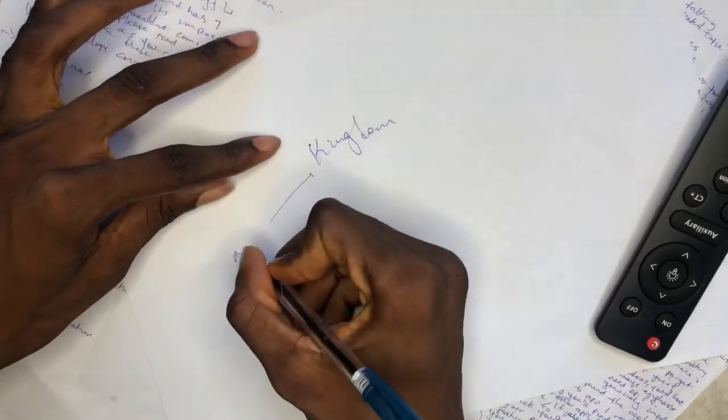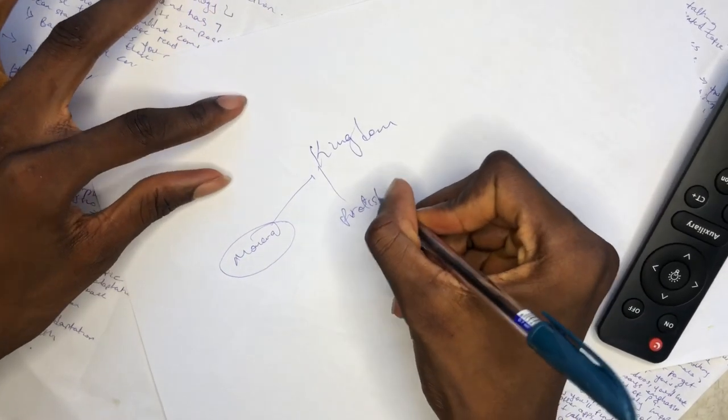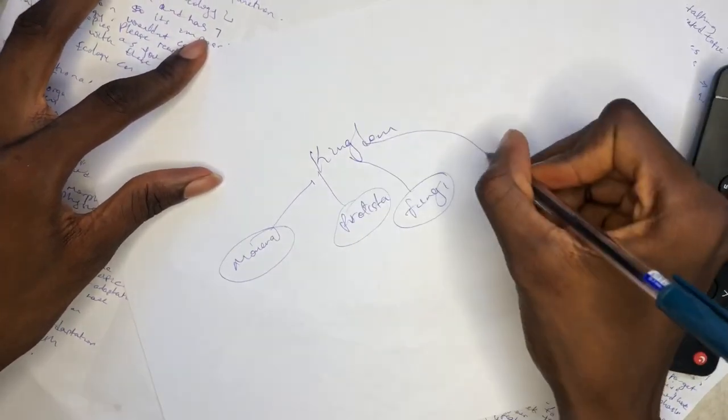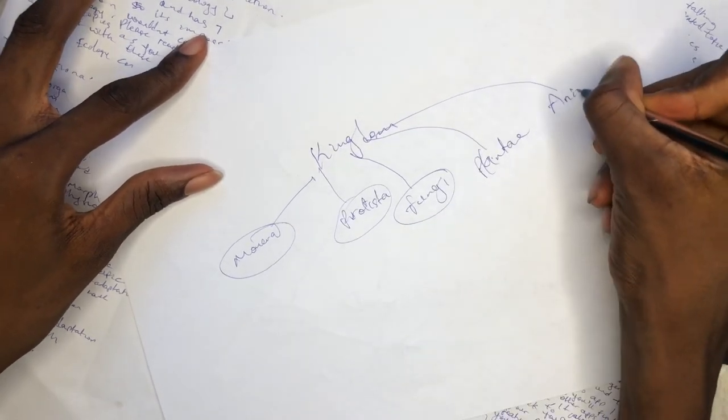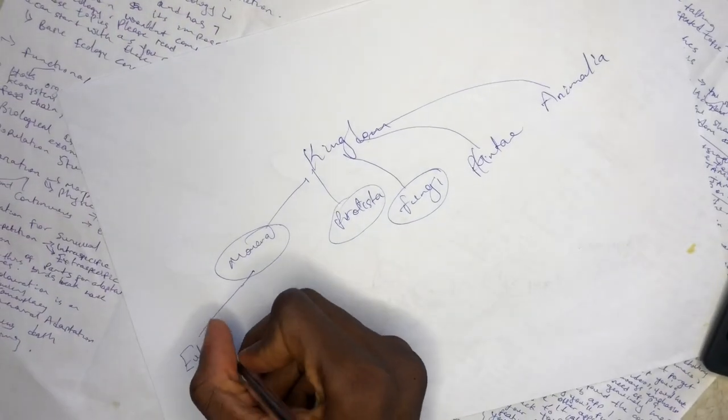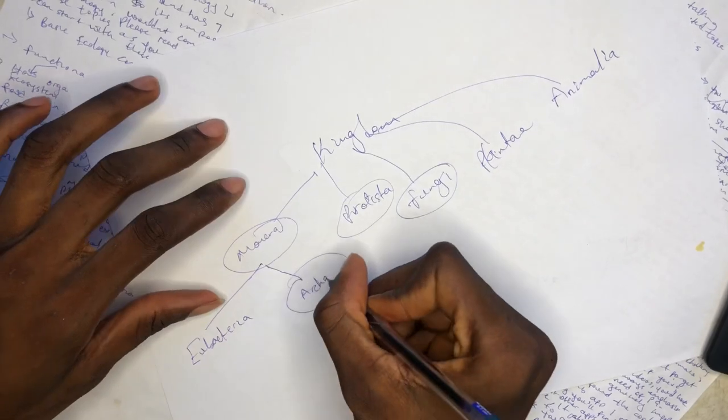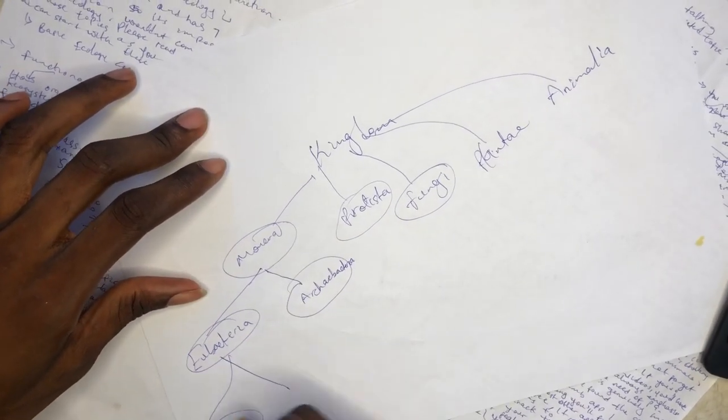The second method for remembering is mind mapping — writing a particular idea and connecting it with other ideas. For classification, write the five kingdoms, link each to its main phyla, and link each phylum to its organisms. At the end you'll have most of the important information on a single piece of paper that you can always go back and review.